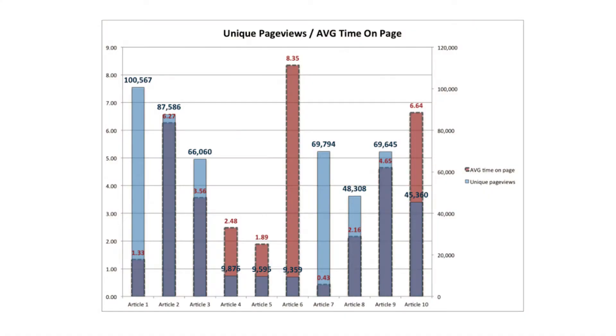Once you've collected a good amount of data, you can put it into Excel and fairly quickly analyze your content — looking at page views versus average time on page — to get an insight into how well your content is doing. Although your page views might not be too high, if someone is spending a decent amount of time on that page it means they're getting value from that content, and that content is working well from a user perspective.